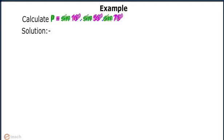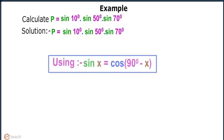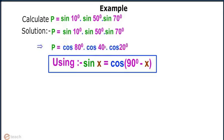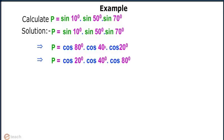Observe the solution. We write P equals sin 10° · sin 50° · sin 70°, using sin x equals cos(90° minus x). We can rewrite P equals cos 80° · cos 40° · cos 20°. Rearranging the terms, we get P equals cos 20° · cos 40° · cos 80°.